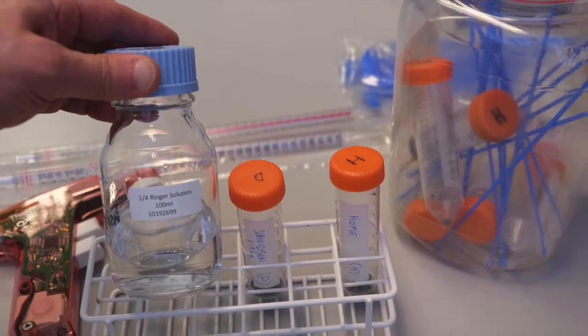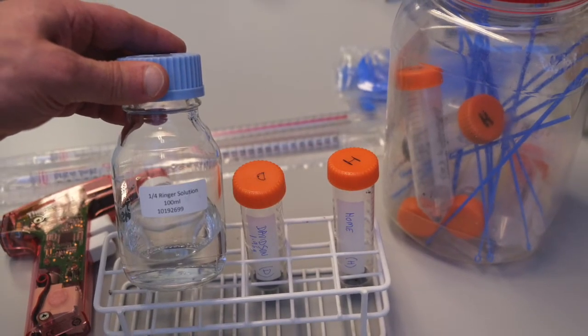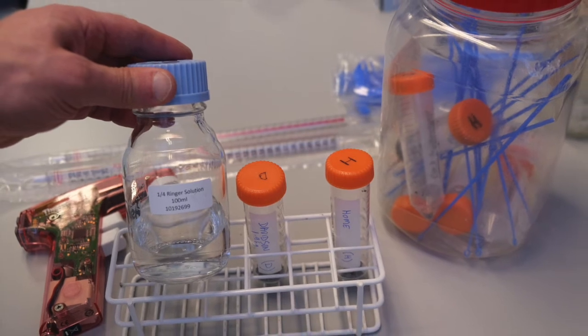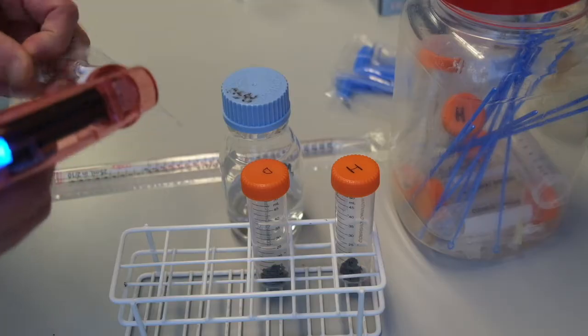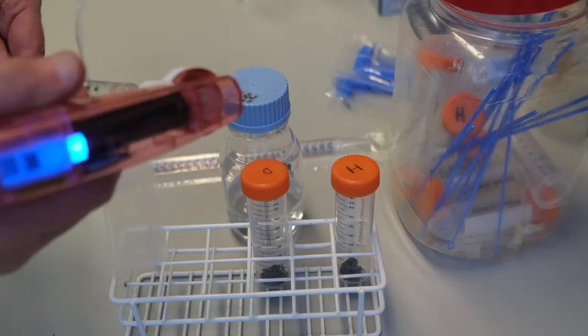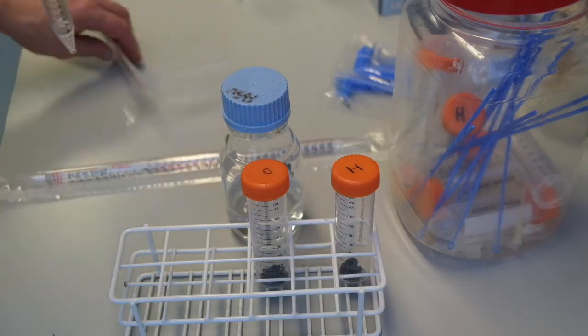We will re-suspend each soil sample in 25 milliliters of Ringer's solution. Then using this 25 milliliter pipette and an automatic pipetter we add the Ringer's solution to each soil sample.